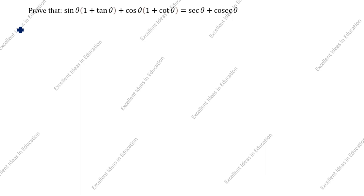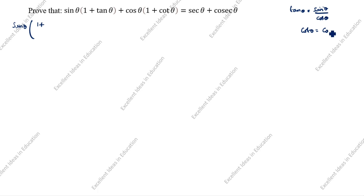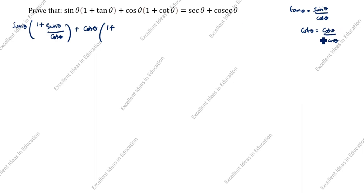So how we will do this: sin θ open bracket 1 plus tan θ. How we will write tan θ? tan θ is equal to sin θ by cos θ. And cot θ, how we will write? cos θ by sin θ. So we write sin θ open bracket 1 plus sin θ divided by cos θ, plus cos θ open bracket 1 plus cot θ, which is cos θ by sin θ.